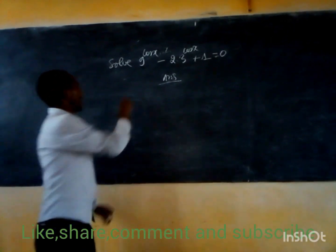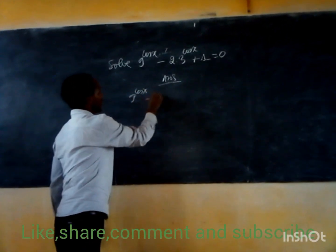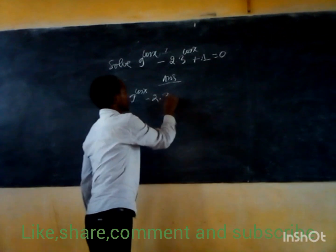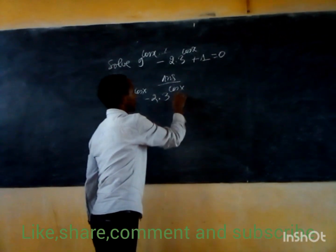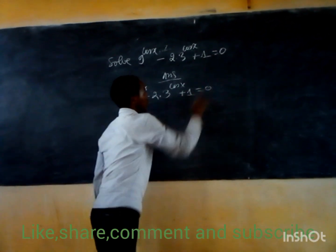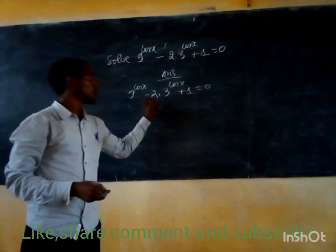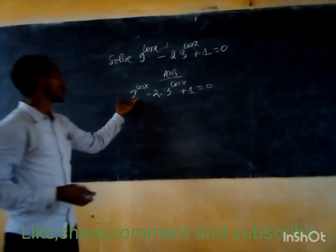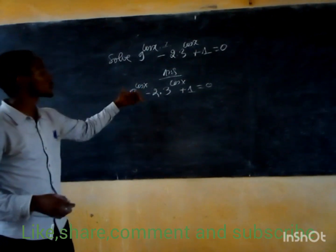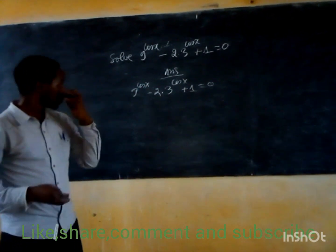So, 9 to the power cosine of x minus 2, times 3 to the power cosine of x plus 1, is equal to 0. This is the exponential equation. It is also the equation of indices, and it is also a trigonometric equation.